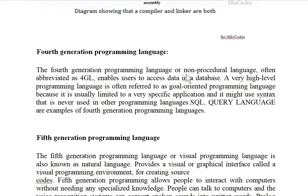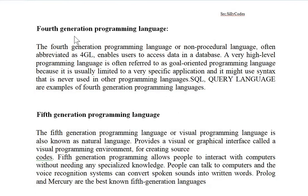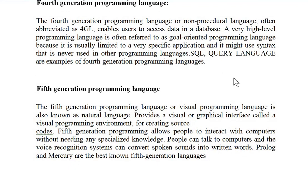Fourth generation programming language, often abbreviated as 4GL, is also called non-procedural language. It enables users to access data in a database. It is often referred to as a goal-oriented programming language because it is usually limited to a very specific application. Examples of this language are SQL or query language.